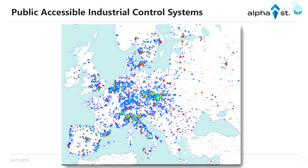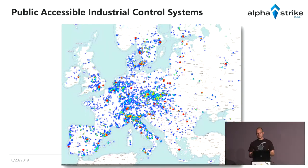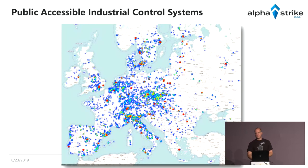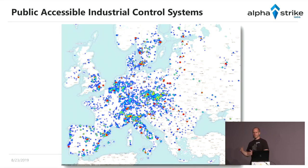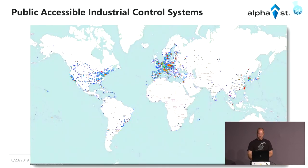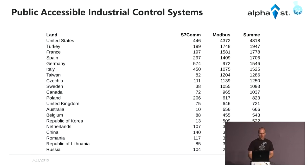Scanning for industrial control systems using S7comm protocol, we can see a very broad distribution across Europe, and a hard correlation with economic activity. In the former GDR region there are fewer industrial control systems; more in the south and west. Northern Italy — a major economic area — has a lot of industrial control systems. Southern Italy has fewer. Scotland has fewer compared to England. You can actually derive economic power from internet scan data, which is very interesting. And it's a major problem that people are putting industrial control systems on the internet.